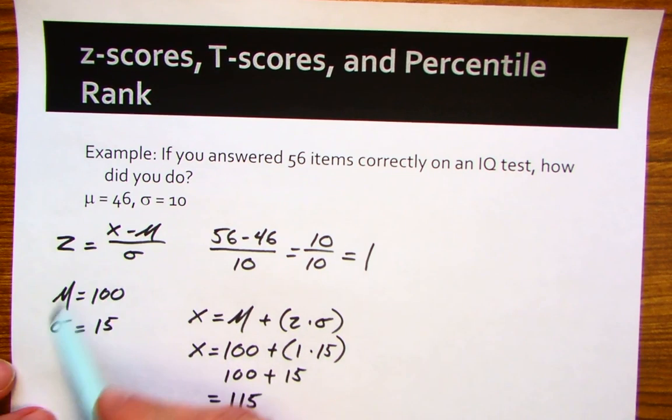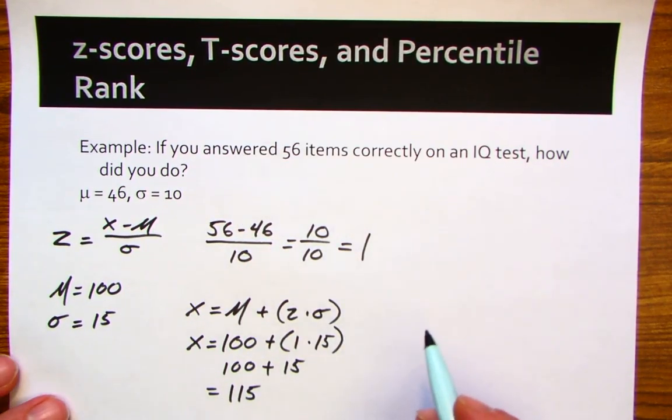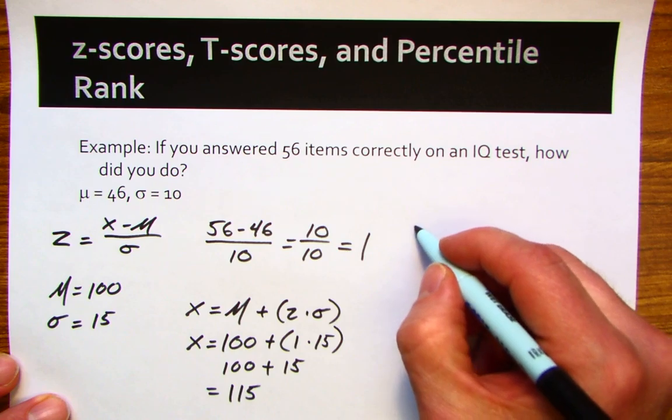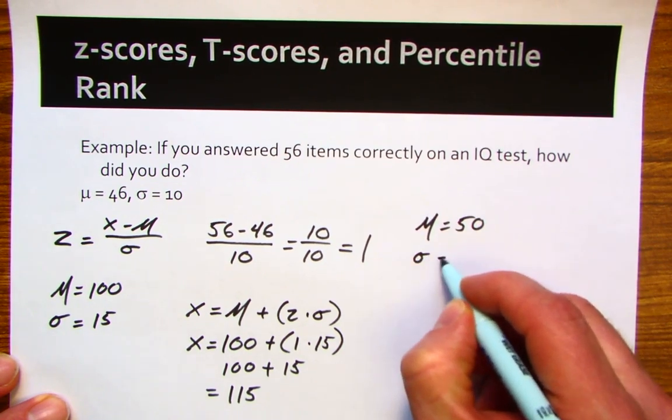This is one way in which we transform scores. Another one is with t-scores, which is often what's seen. With t-scores, the mean is always 50 and the standard deviation is always 10.